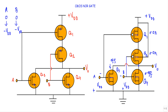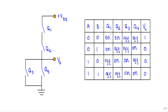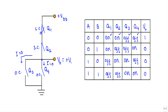For input 0,0: Q1 and Q2 are ON, Q3 and Q4 are OFF. Since Q1 and Q2 are ON, I can replace them with short circuits. Q3 and Q4 are OFF, acting as open circuits, so no current flows through those paths. The voltage drop from the output terminal to ground is zero, so plus VDD appears at the output terminal — giving us logic 1. For input 0,0, the output is logic 1.